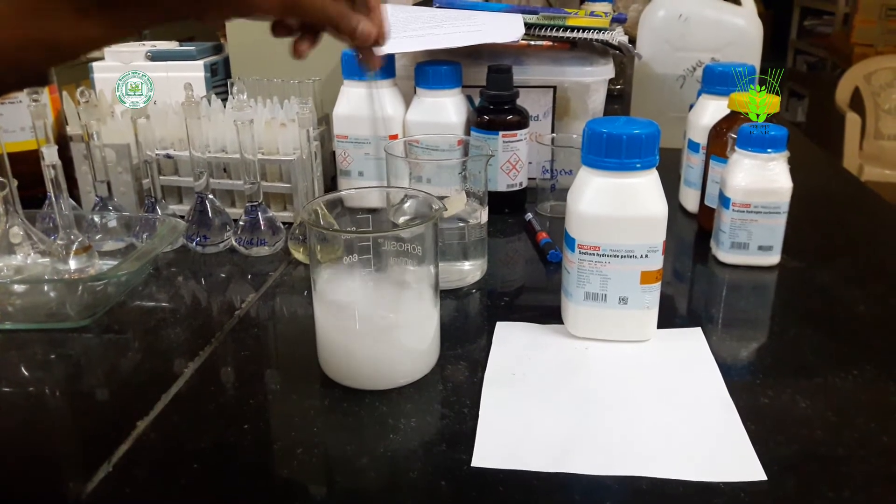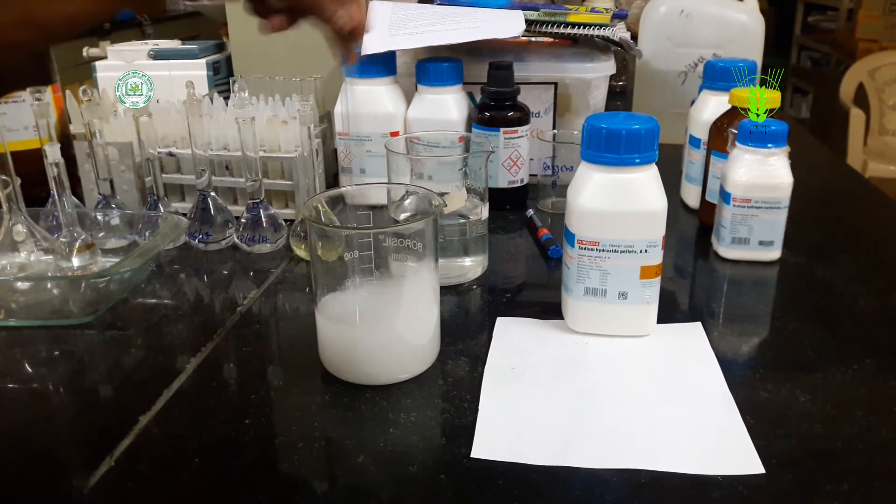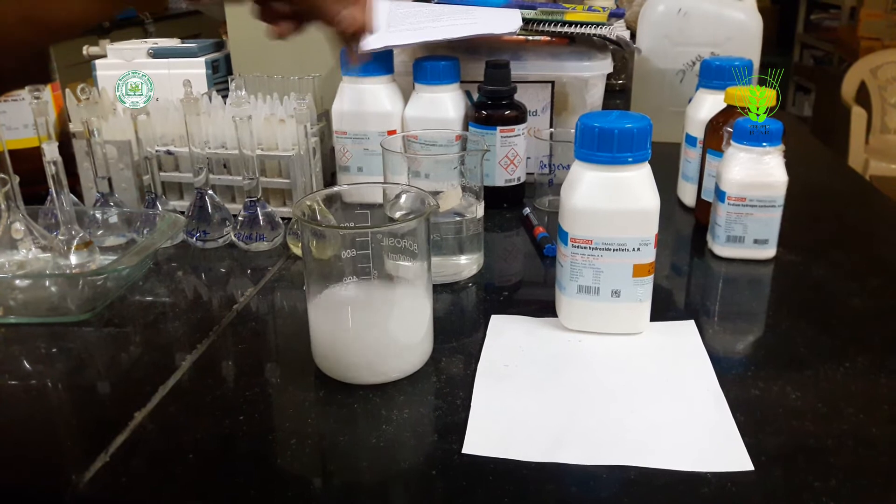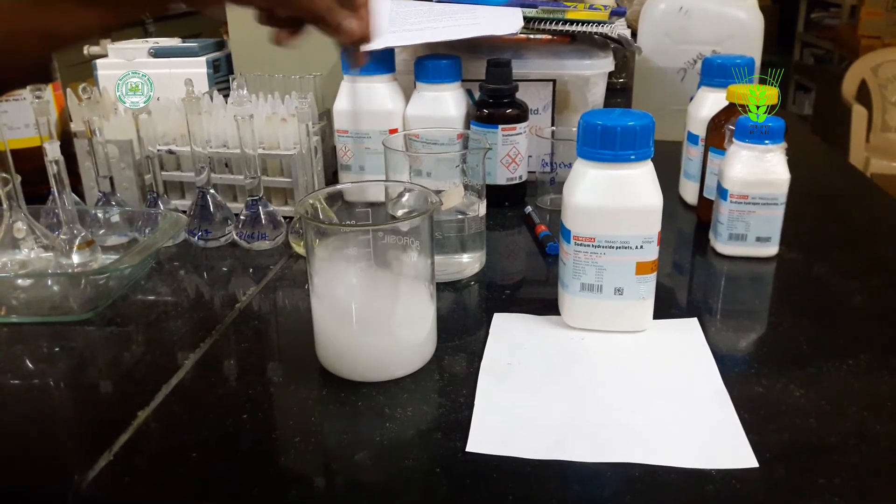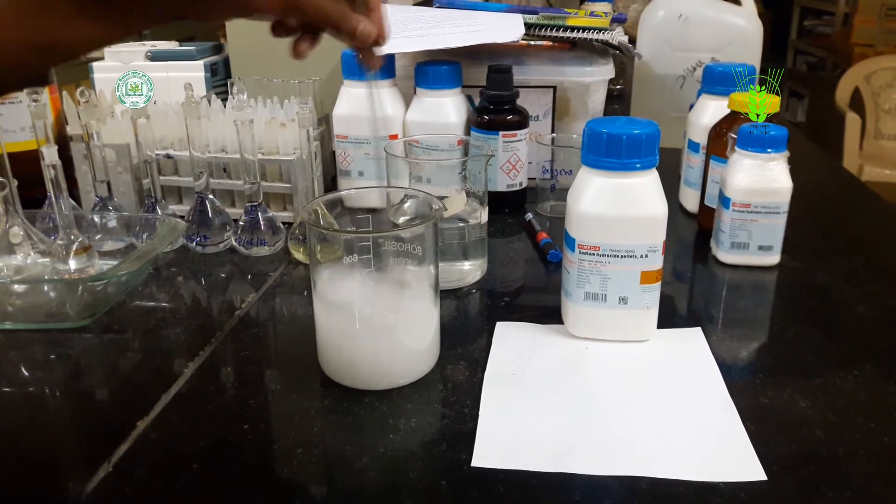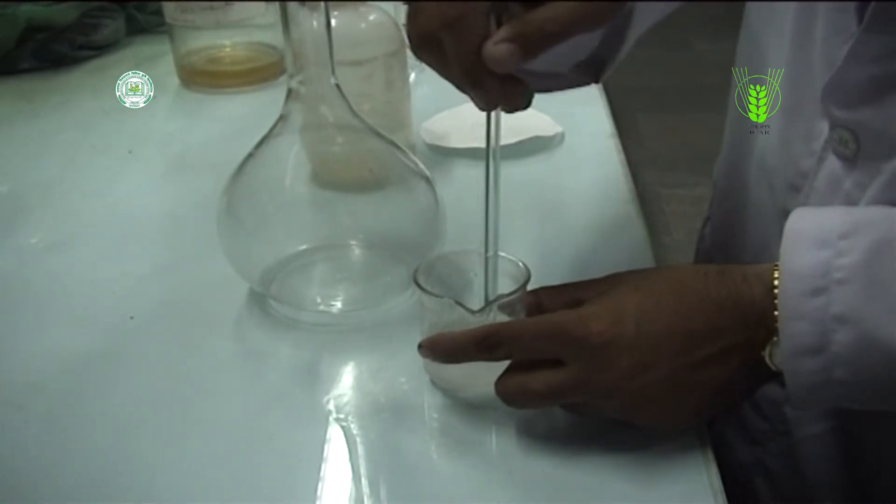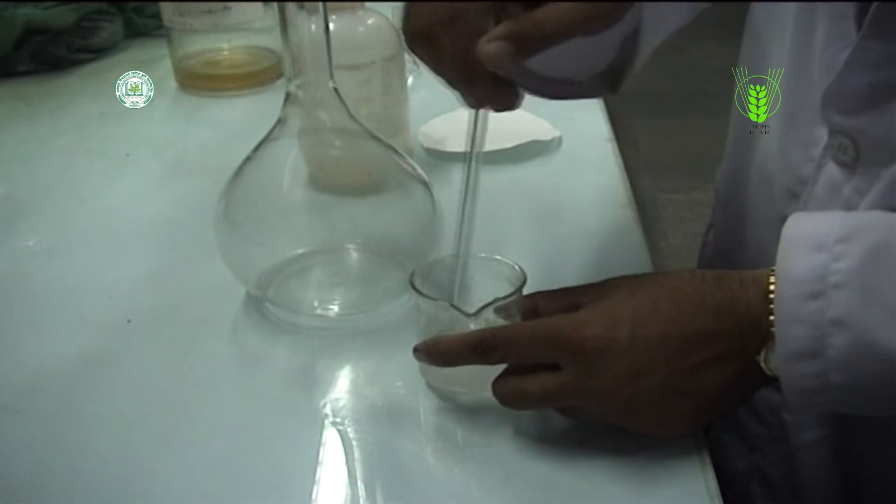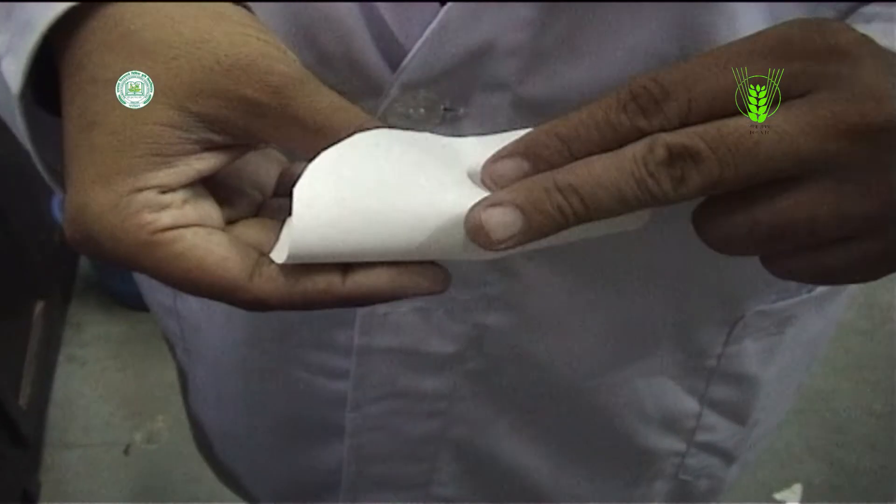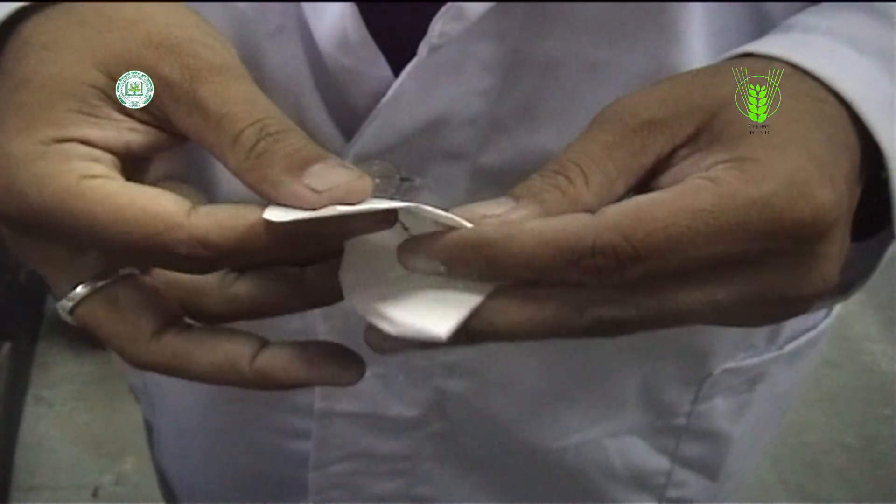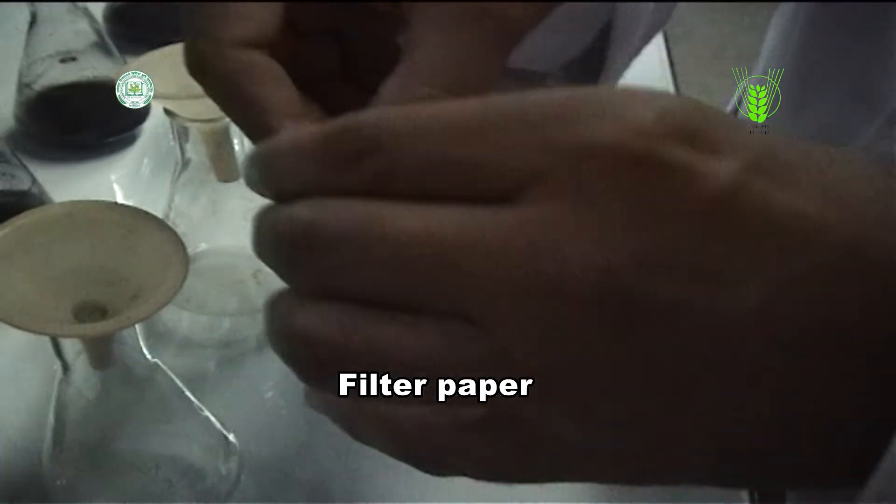Stirring rods are used to mix chemicals and liquids for laboratory purposes. They are usually made of solid glass about the thickness and slightly longer than a drinking straw, with rounded ends like most laboratory glass. Stirring rods are made up of borosilicates commonly known as Pyrex. Filter paper. This is filter paper used for filtration of solution.